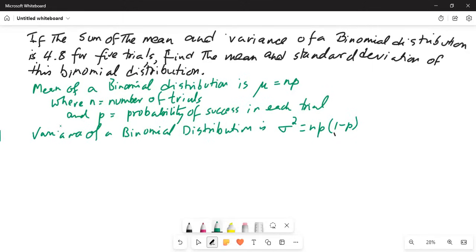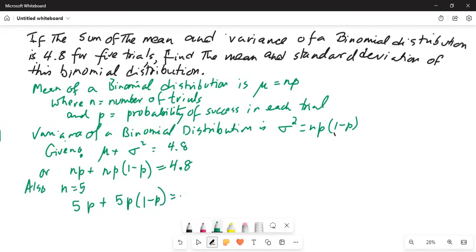It's given to us that mu plus sigma square is equal to 4.8, or n times p plus n times p times 1 minus p is 4.8. Also, n is equal to 5 number of trials. So, 5 times p plus 5 times p times 1 minus p is equal to 4.8.